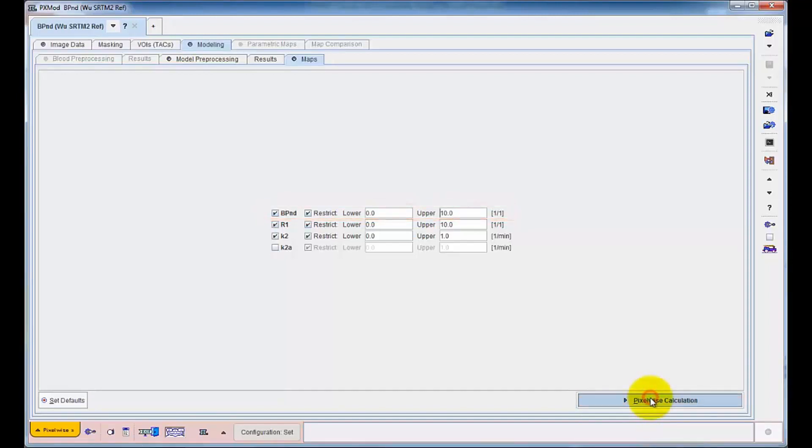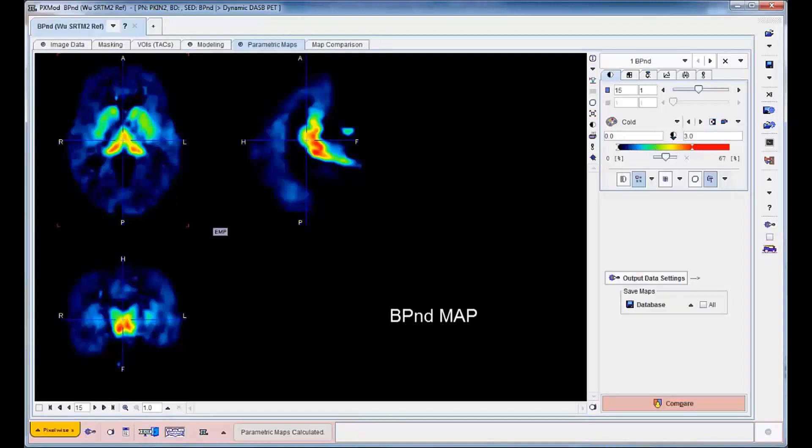Finally, the simplified reference tissue model with fixed K2' is applied in each pixel. The resulting BPND map is shown on the next page. It represents the distribution of the serotonin transporter in a quantitative manner.